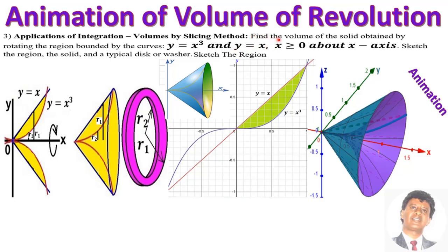The first problem: find the volume of the solid obtained by rotating the region bounded by the curve y equals x cubed and y equals x, where x is greater than or equal to zero, rotated about the x-axis. The top curve is y equals x and the bottom curve is y equals x cubed. This region is rotated around the x-axis.